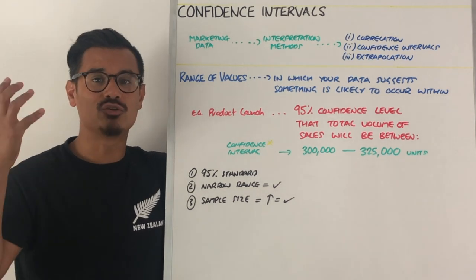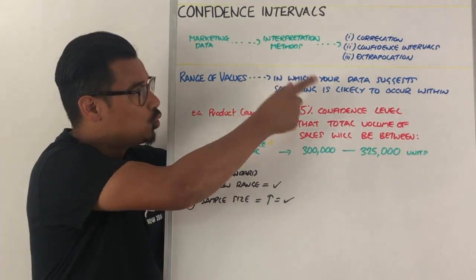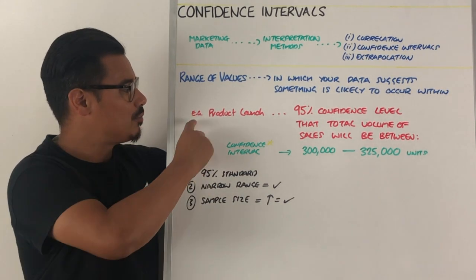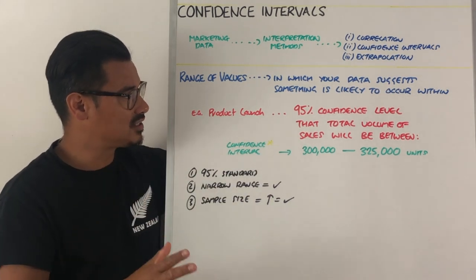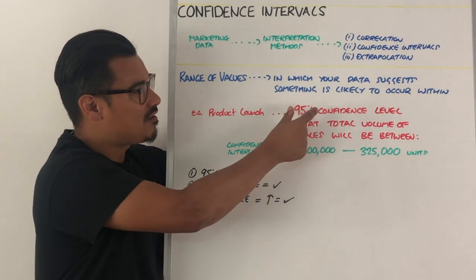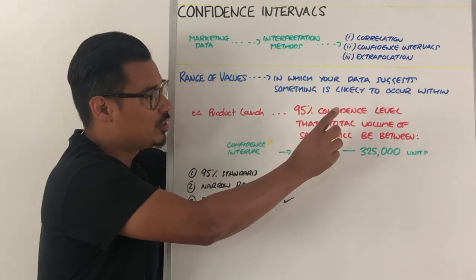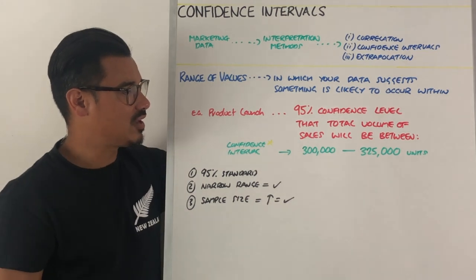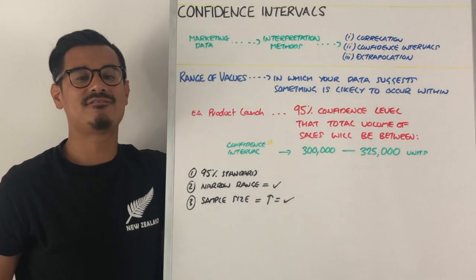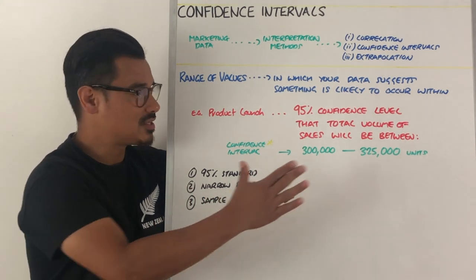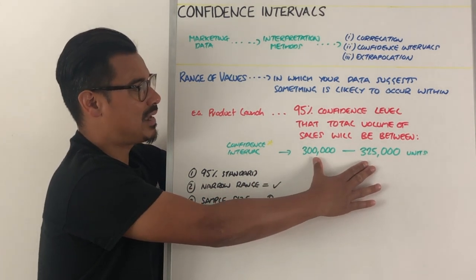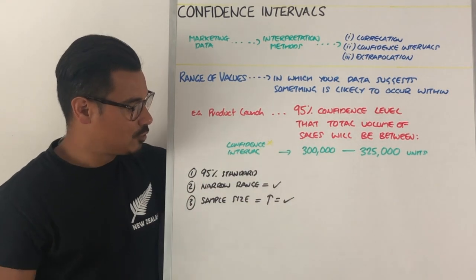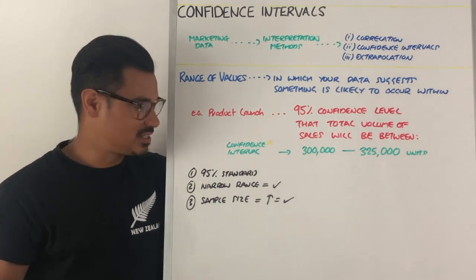Confidence intervals are effectively just a range of values that your data suggests something is likely to occur within. For example, you have a product launch, you've done your marketing data, and you have a 95% confidence level that your total volume of sales will be between 300,000 units sold and 325,000 units sold. That is your confidence interval, and sometimes it will be called your margin of error — it's just the same thing.